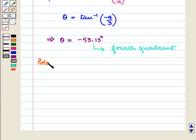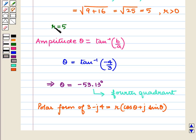So, polar form of 3 minus j4 is equal to r into cos theta plus j sin theta. We have already found out the values of r and theta that is r is equal to 5 and theta is equal to minus 53.13 degrees.